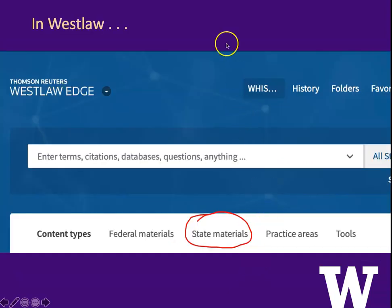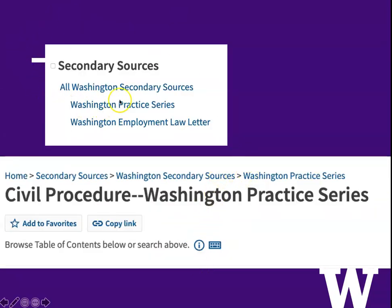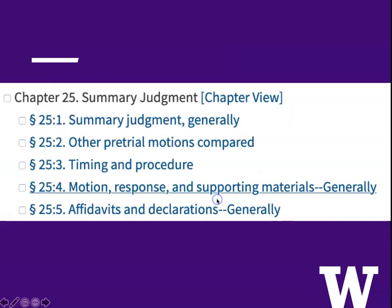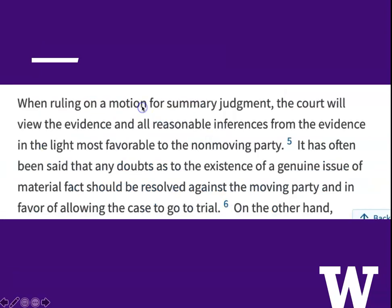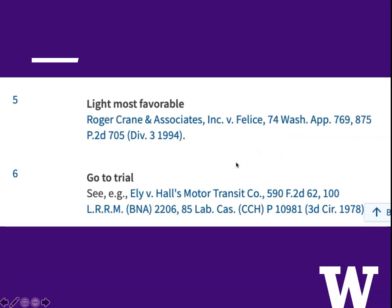In Westlaw, you could do a similar thing. Go to State Materials, choose Washington, and look at all Washington secondary sources. Washington Practice has a volume on civil procedure and it has a chapter on summary judgment. When you read that chapter, it gives you an overview and it has footnotes that lead you to cases. So it's not that you're giving up on cases — you're just finding a more efficient, better organized way to get to the cases.